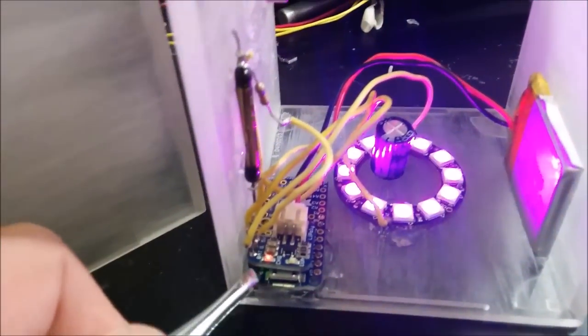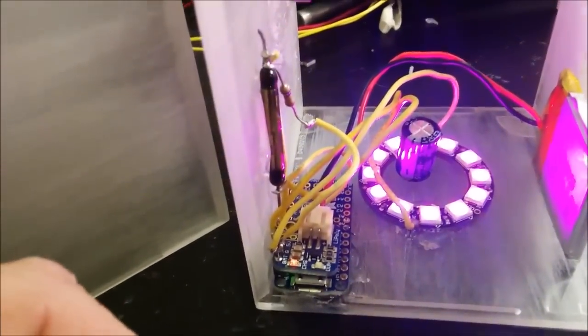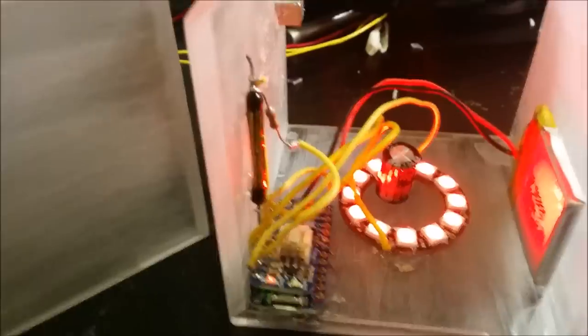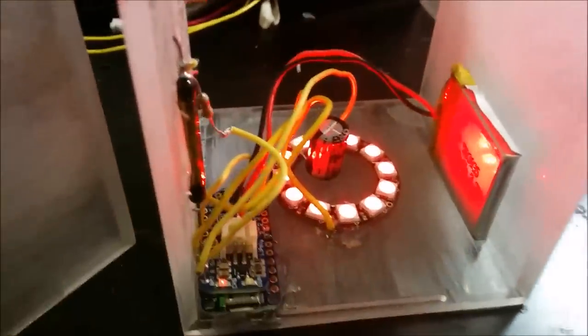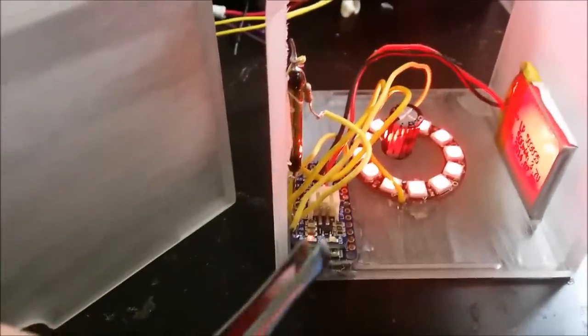The electronic components are stock stuff off of Adafruit. You've got a Pro Trinket here, supported by a lithium ion charge controller. The lights, of course, are WS2812 Neopixels, everyone's favorite. The battery is 400 milliamp hours, that's enough to get us to each other's houses and we can boop them together and they do the glowy thing.